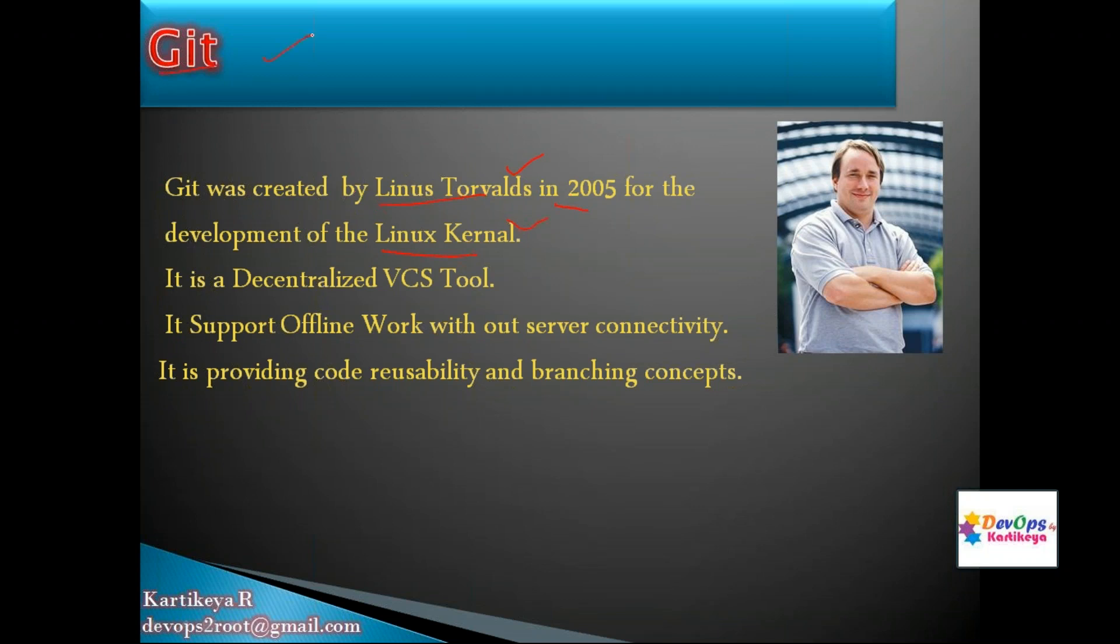Git is a decentralized version control system. Instead of changes being saved in a central location like other VCS tools, Git is decentralized. It supports offline work - you can work offline and commit your changes. It provides code reusability and branching concepts, allowing you to reuse code dynamically.